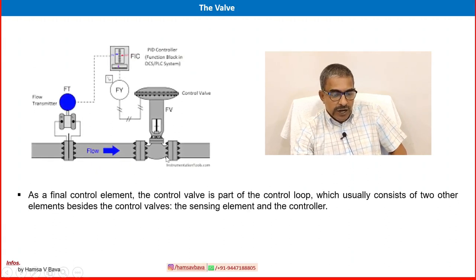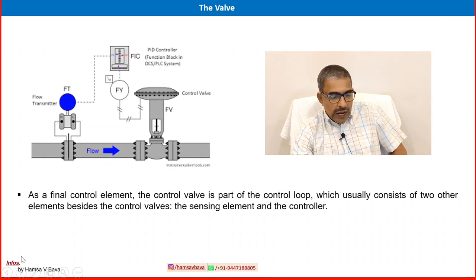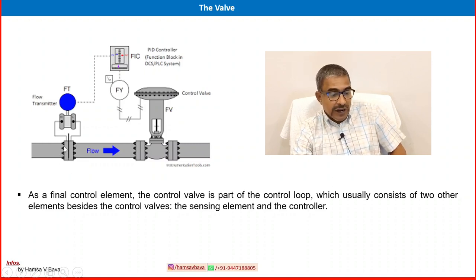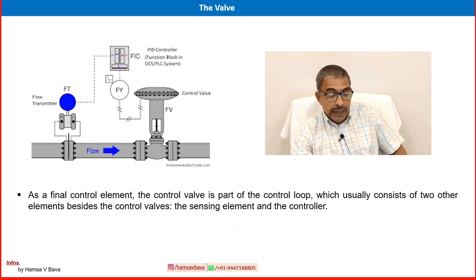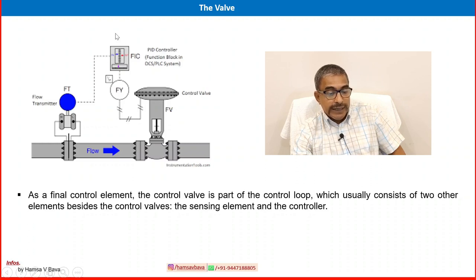One more explanation on the control system: the control valve as a final control element is part of the control loop, which usually consists of two other basic elements — the sensing element and the controller. The sensing element is located in the process and measures flow, pressure, temperature, or level. It converts the measurement into a signal provided to a transmitter — in this example, a flow transmitter. The transmitter converts the signal into a suitable communication method, either pneumatic or electronic, and sends it to the controller, which is hardware located in the control room or local equipment room, called the FIC — flow indicator controller.